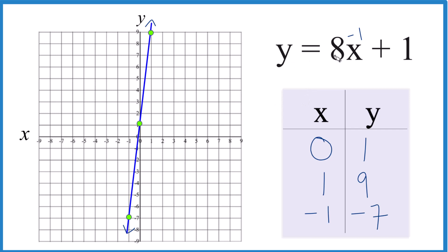That's the line for y equals 8x plus 1. You could put other values in for x — they would give you values for y, and if you plot them, they'd be on this line. This is Dr. B. Thanks for watching.